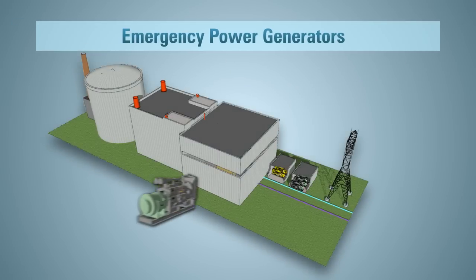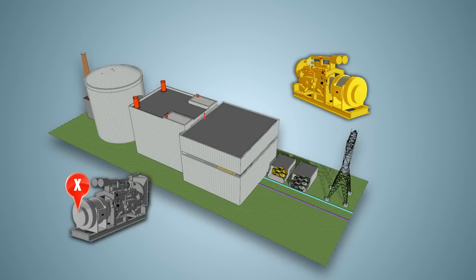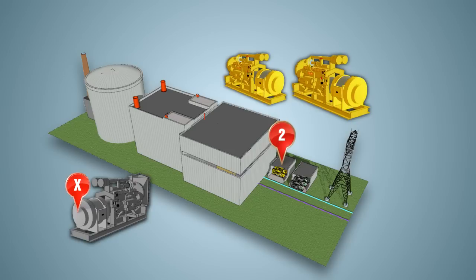If, for some reason, standby power generators stop working, emergency power generators are then used. A nuclear power plant requires only one emergency power generator to provide enough electricity to power all of the important safety systems. But again, as a precaution, all nuclear power plants have at least two emergency power generators on site.